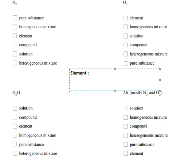We need to know that when we have elements, there should be one type of chemical unit. For compounds, there should be more than two elements. A solution is a mixture of two different chemicals.